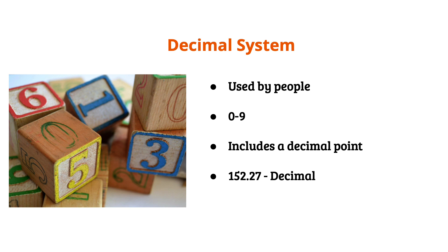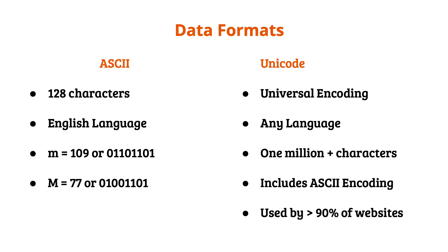Two data encoding standards are ASCII and Unicode. ASCII is the American Standard Code for Information Interchange, and it is used to encode text data on computer systems. Standard ASCII encoding has a limitation of 128 characters. ASCII assigns a value to the letters, numbers, and symbols you see on your keyboard. When the button for the character or symbol you want is pressed, the computer uses an ASCII table to translate it to binary code. A lowercase m in ASCII is represented as 109 in decimal, and 01101101 in binary. This makes it easier for humans to type in a language we understand, which then gets converted to a language the computer understands — it is like a translator for humans and computers.